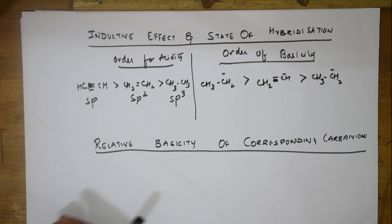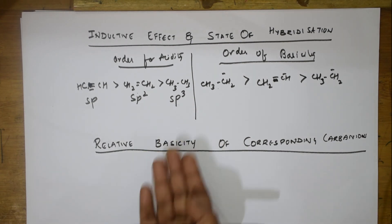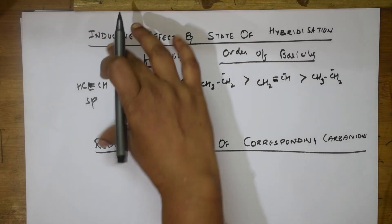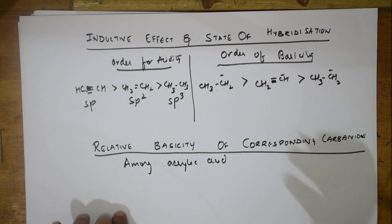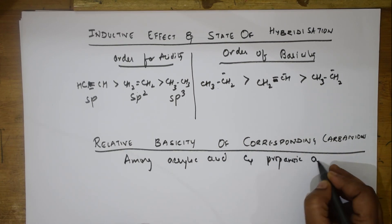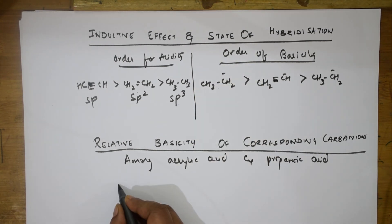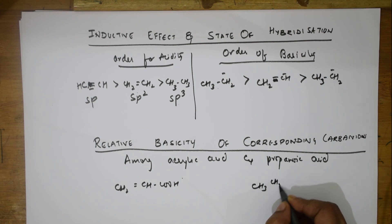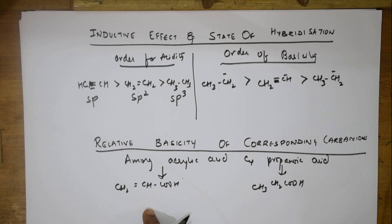One more concept: if they ask you to compare acrylic acid and propionic acid — which is more acidic? Acrylic acid is CH2=CH-COOH and propionic acid is CH3CH2COOH. I need to explain this in terms of hybridization. Both have electron-releasing groups, so how do we decide?